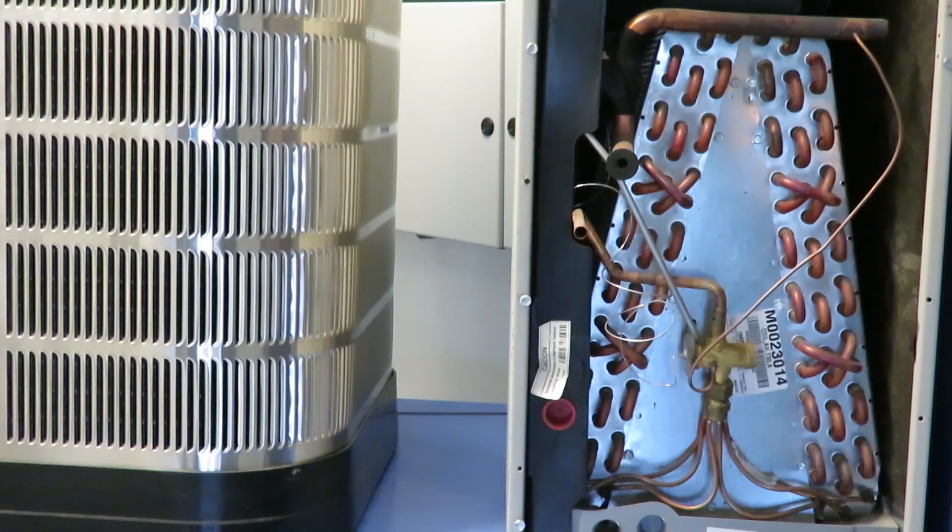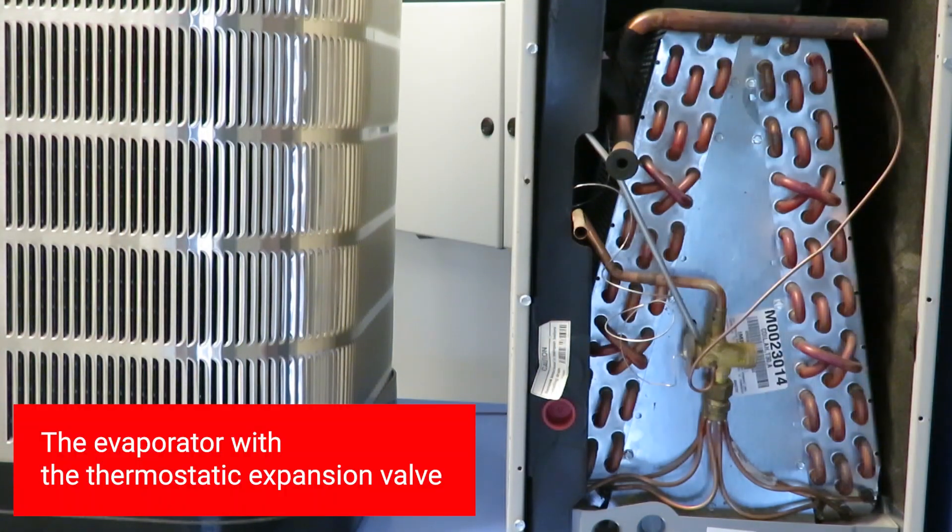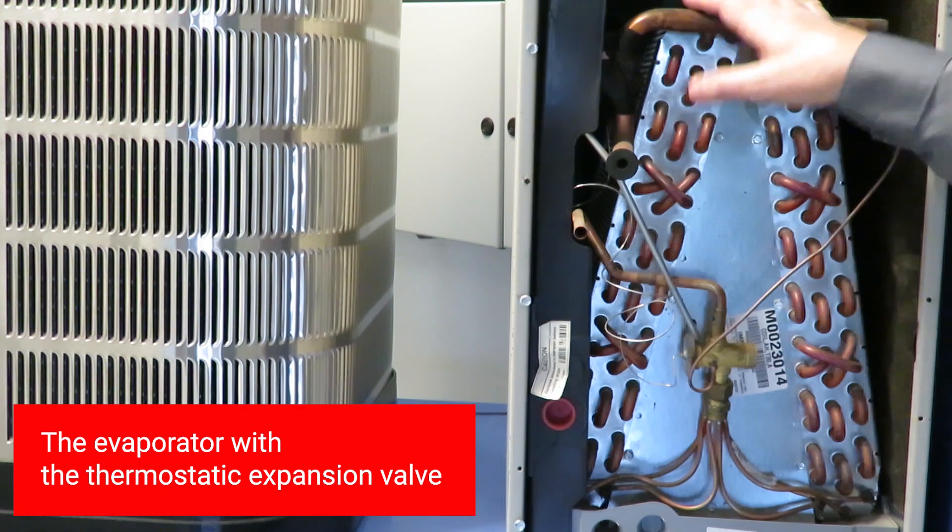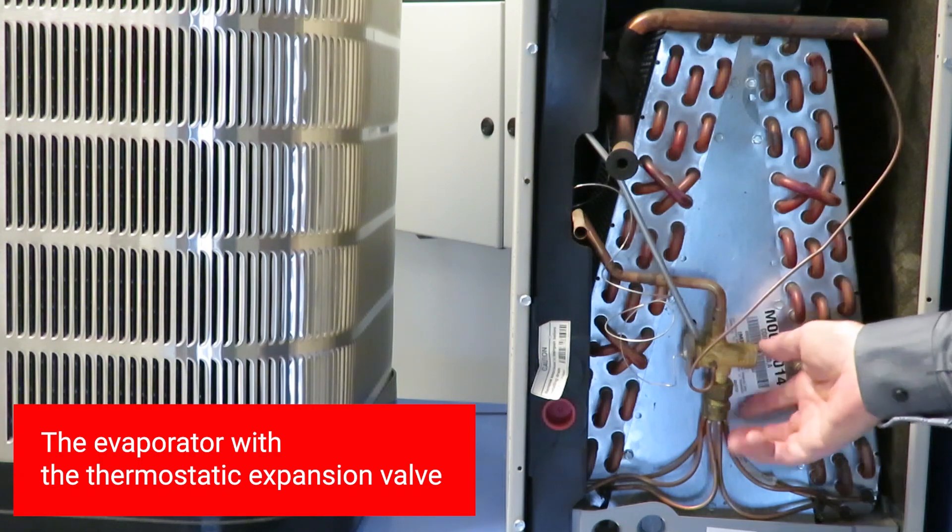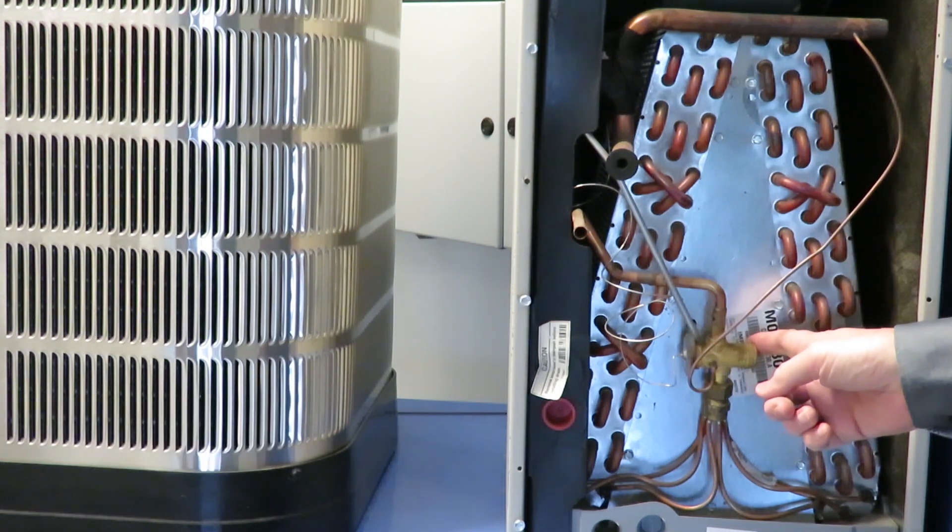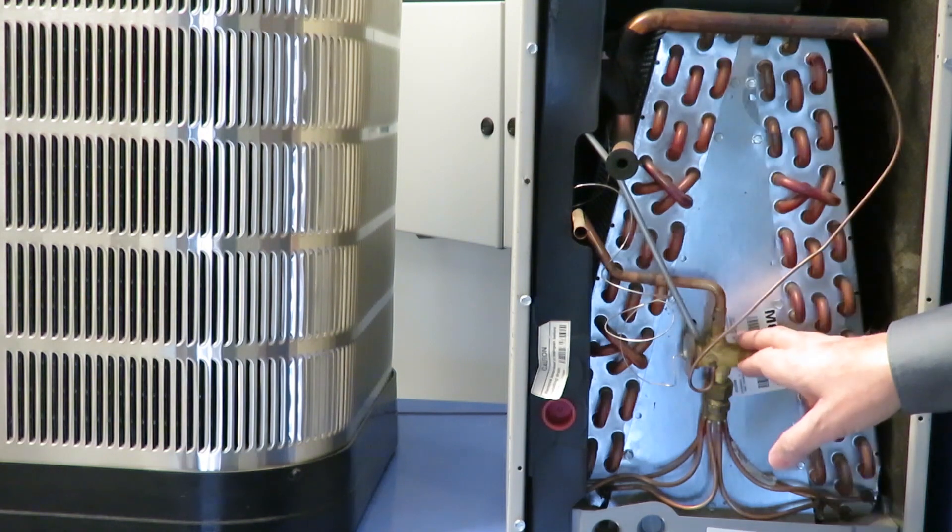Now we have zoomed in on the evaporator and this is the part where the cold air is made. And now we can see where the expansion valve is placed. The expansion valve is this valve here which is placed in front of the evaporator.